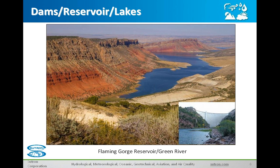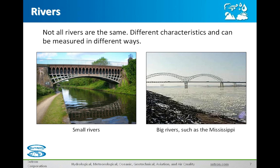The next slide shows different types of rivers and creeks. On the left you'll see a small river, very clean, not running very fast. You have a structure where you can mount a non-contact sensor, and areas where you can install a gauge on the side of the river. It makes it very simple and pretty easy for that particular site.